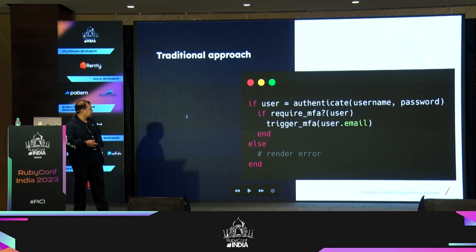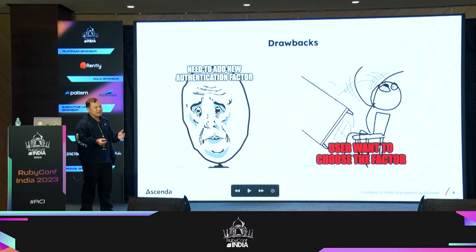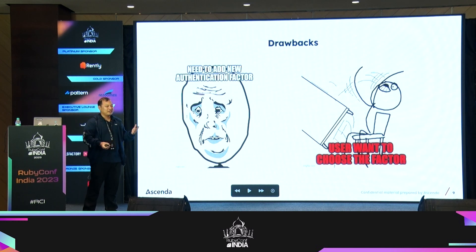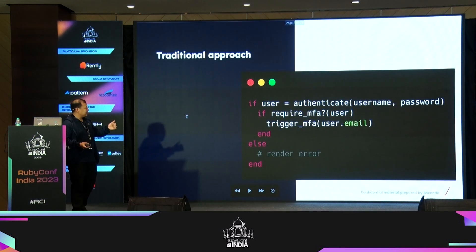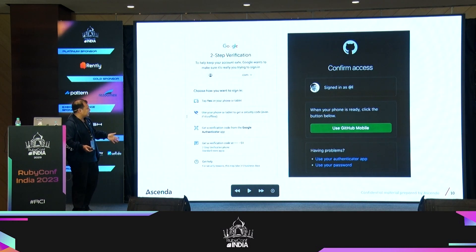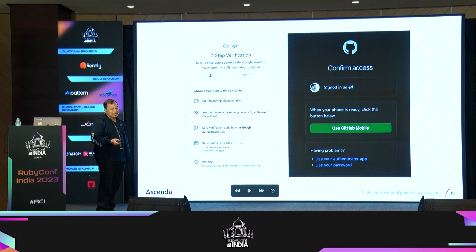What is the problem with this approach? If the user says they don't want to use email for MFA and want to use SMS or an authenticator app, or they want to choose between multiple ways — for example, if they lost their phone and don't have SMS or the authenticator app anymore — then with this approach you will probably end up with a lot of if-else conditions, and it's not very easy for users to choose their authentication factor, like Google or GitHub offer.